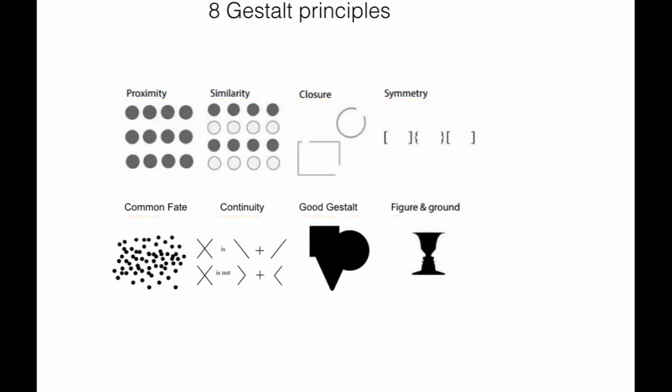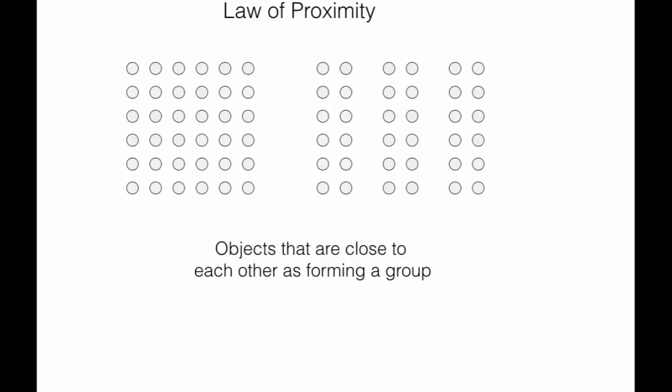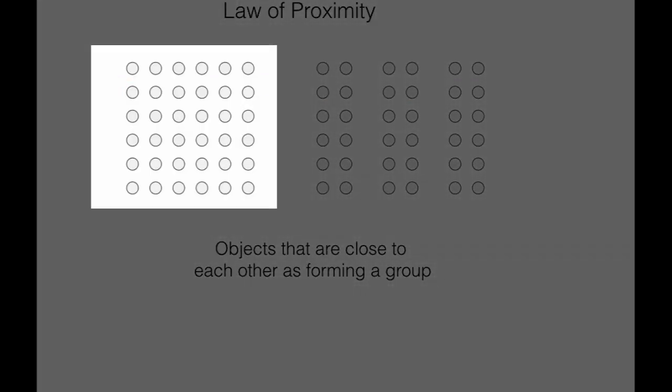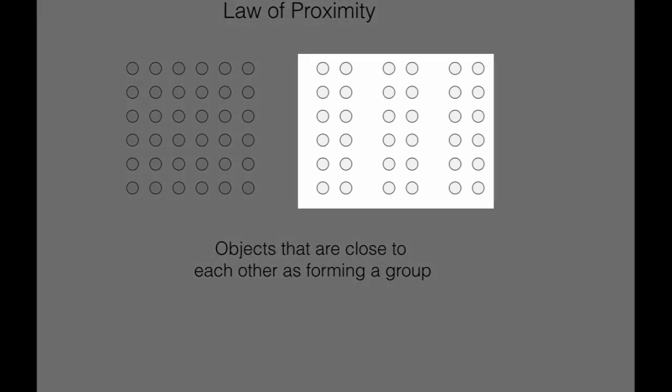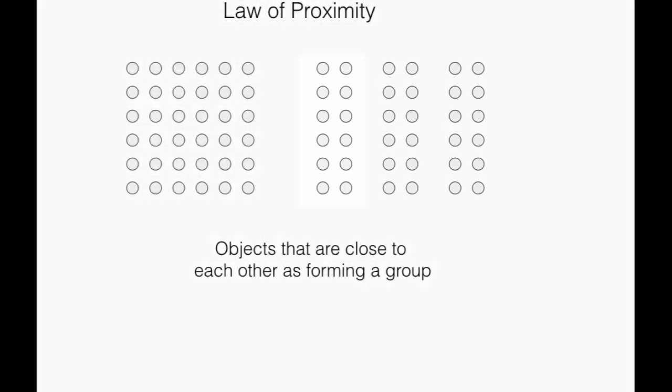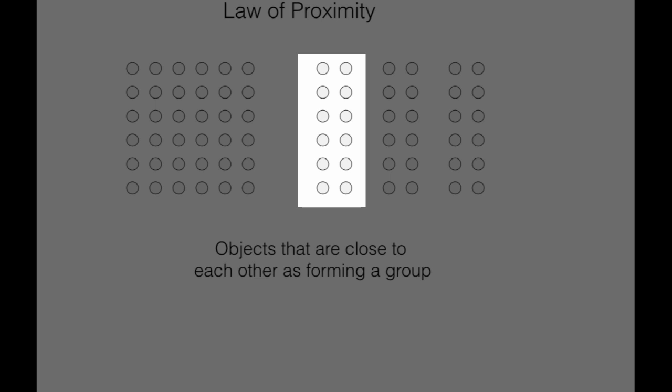Let's start with proximity. For example, you can see here that all the dots are having equidistance, so you think that this is actually a single object. But on the right hand side, you can see that these dots are divided into three parts. The first part is the first column and the second column of the dots.